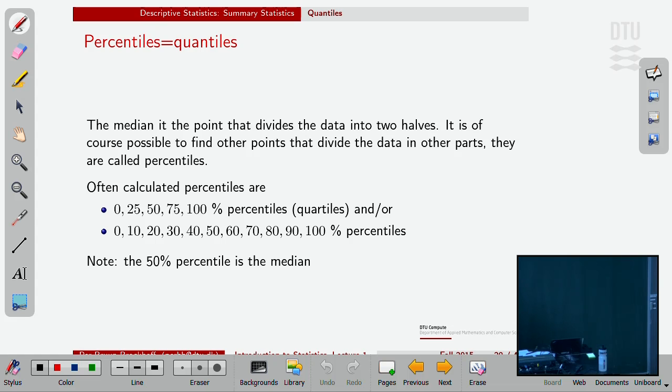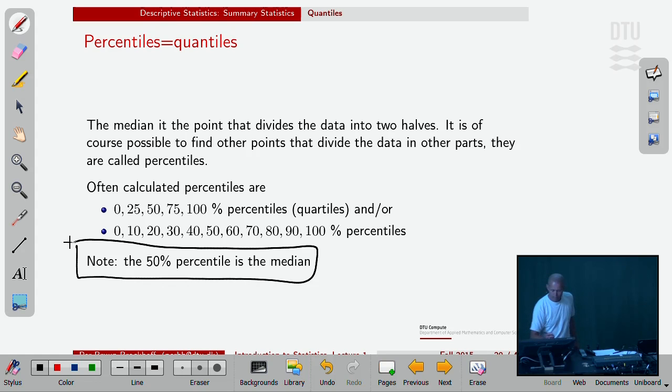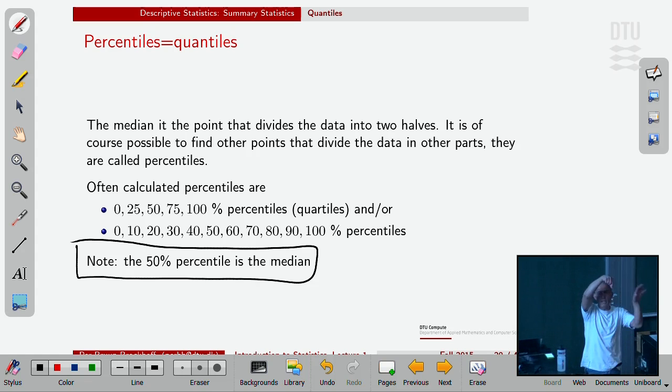Quantiles or percentiles. Actually, just two synonyms for the same thing. We talk about a 50% percentile, or we talk about a 0.5 quantile. Why did I mention those? Because we've already met that guy. The median, as I defined it to you, was the middle number. That's the number that divides the data in two equal sizes. If you find the median of your data, you would have 50% of your data points below the median, and you would have 50% of your data points above the median. That's the definition of the median.